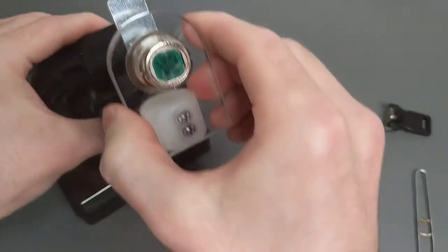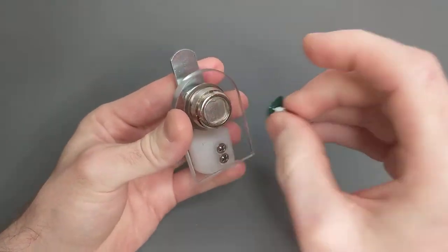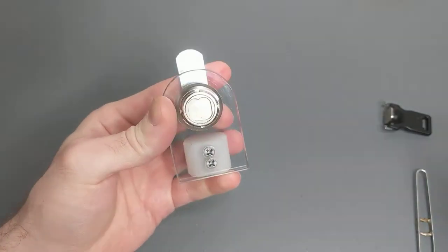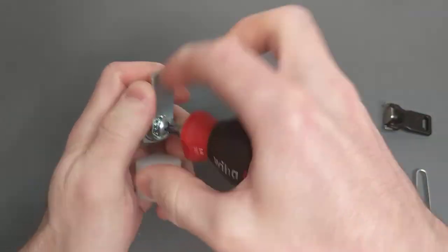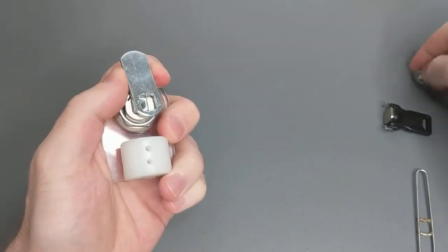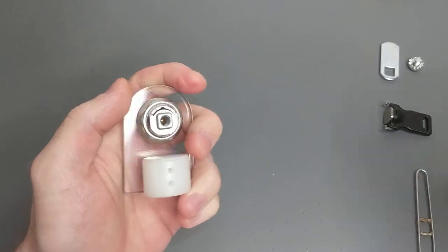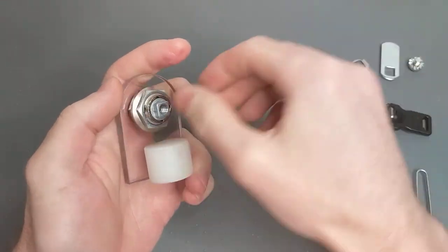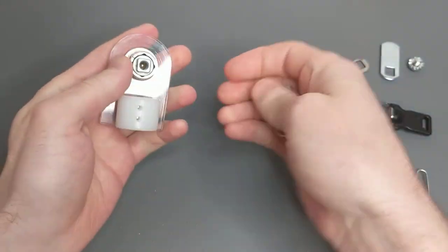So one thing I can do with the cam lock that I could not do with the padlock is I can take it apart and show the mechanism. So take the cam off, and the limiter plate, take it off the little mount.